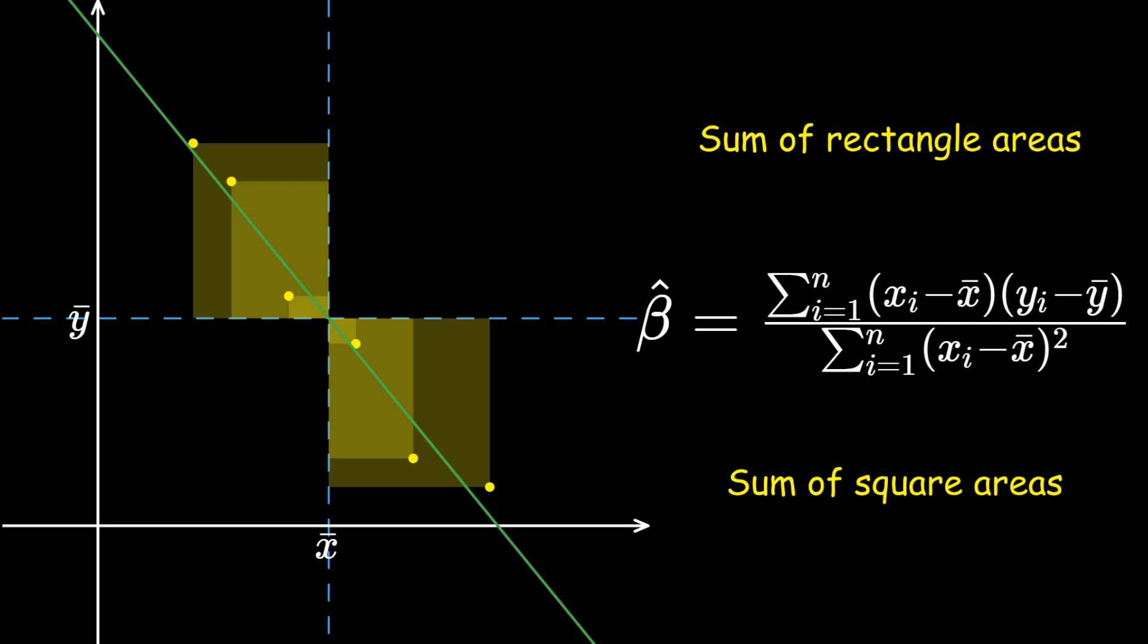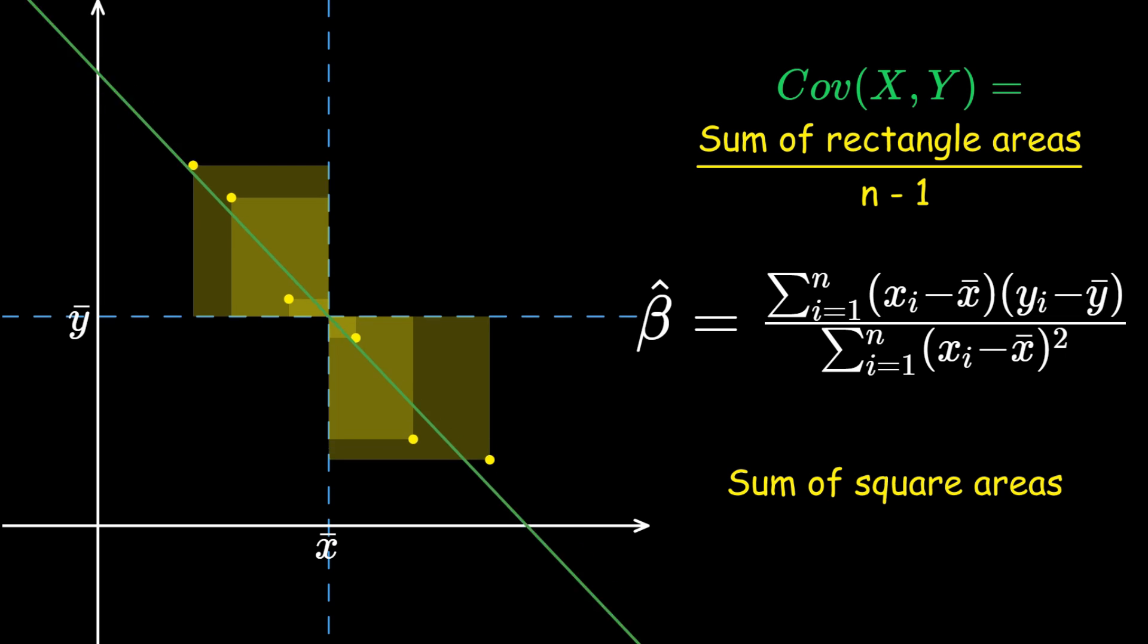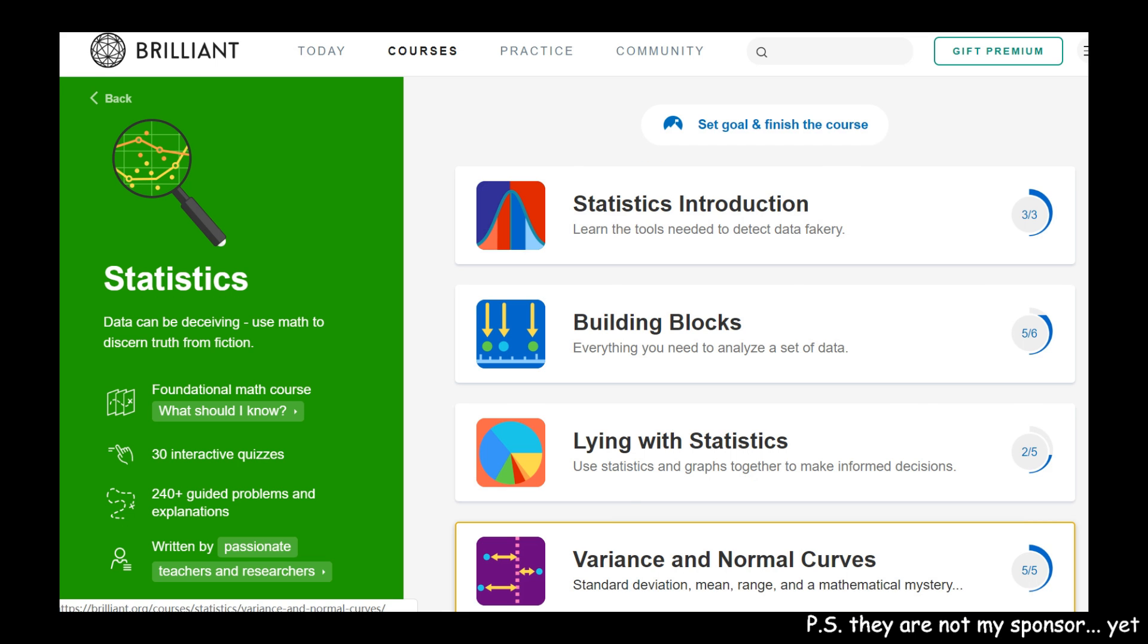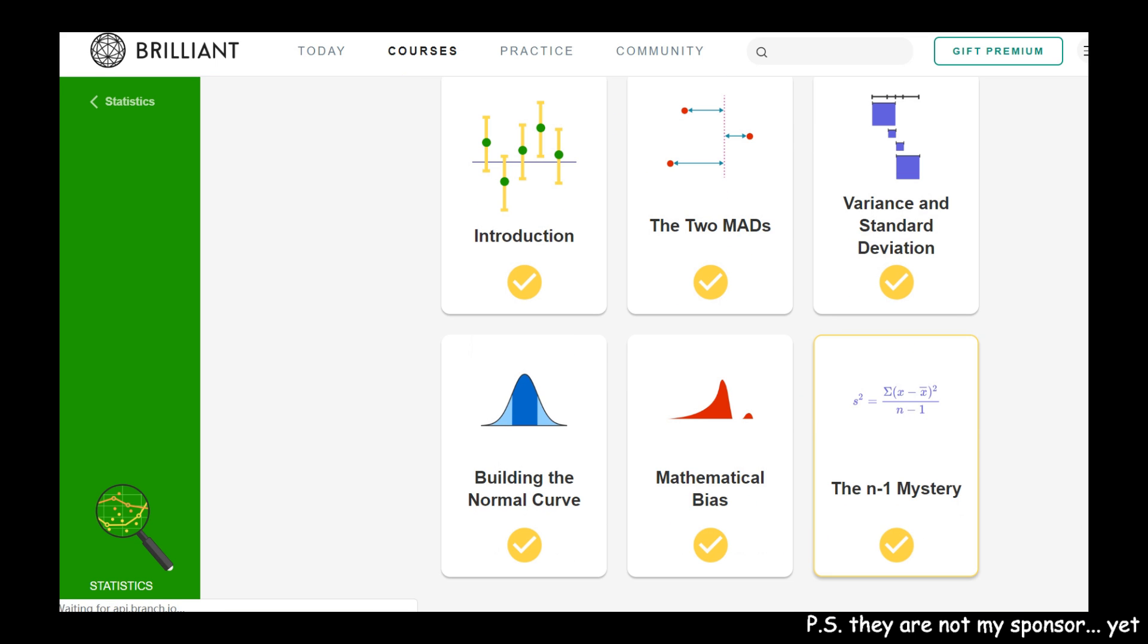And by the way, this sum of rectangle areas is connected to an important measurement in statistics. If you divide it by n-1, you will get the covariance between x and y. Also, for the sum of areas of the squares, dividing it by n-1 will give you the variance of x. If you are curious about why we divide by n-1 instead of n, there is a quiz on brilliant.org that you can check out, the n-1 mystery.